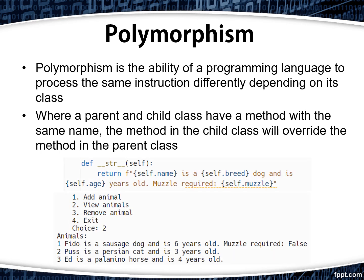It's also possible to override any of the other methods. Here in this example, you can see that we're defining a new string method that will only apply to dogs. In the example below, you can see that the cat and animal objects still call the original string method from animal, whereas the dog object calls our new string method that overrides the one in the parent class.